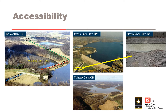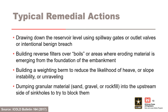It was recommended that an access road be constructed over the conduit at Green River Dam to address this scenario. Access from the left abutment of Mohawk Dam in Ohio will be cut off by spillway flow, and access from the right abutment will be cut off by roadways at lower elevations being submerged by the reservoir. Additionally, emergency stockpiles of materials for flood fighting can also become inaccessible and inundated. Typical remedial actions include building reverse filters over boils or areas where eroding material is emerging from the foundation or embankment, building a weighted berm to reduce the likelihood of heave or slope instability, and dumping granular material such as sand, gravel, or rock fill into the upstream side of sinkholes to try to block them.